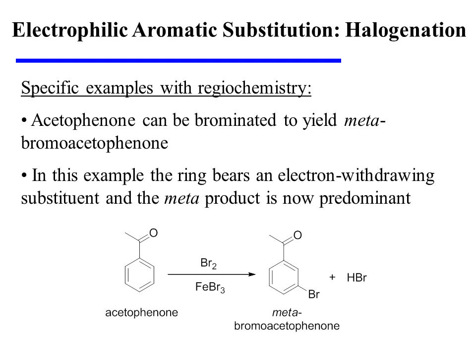Now let's consider a new example in which acetophenone is brominated, yielding meta-bromoacetophenone. Notice that in this example, the ring bears an electron-withdrawing ketone substituent, and the meta product is now predominant. It's useful to compare this to the previous example, in which the ring had an electron-donating methyl group, which led to ortho- and para-products instead.